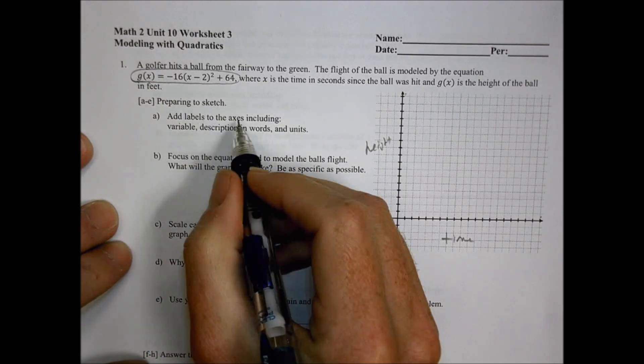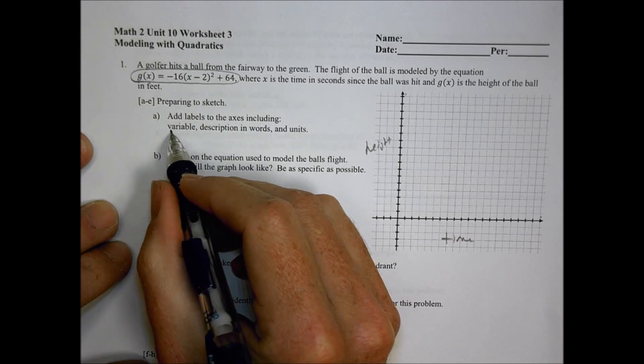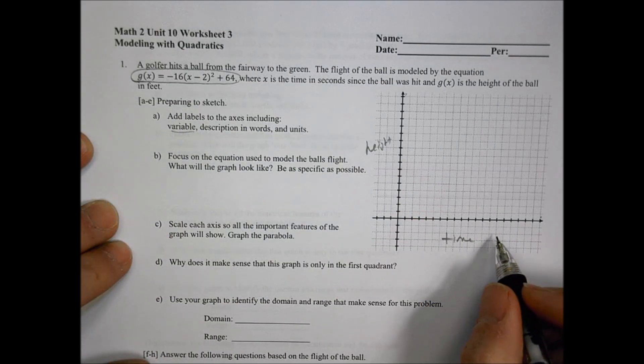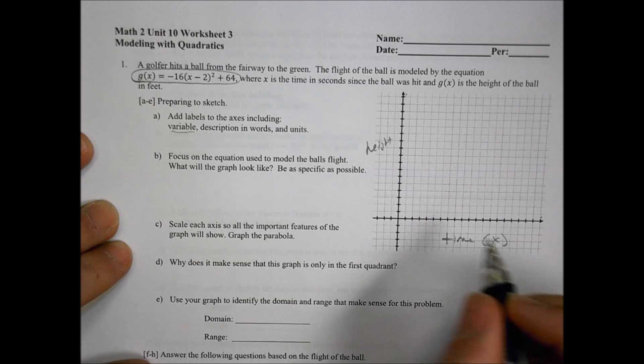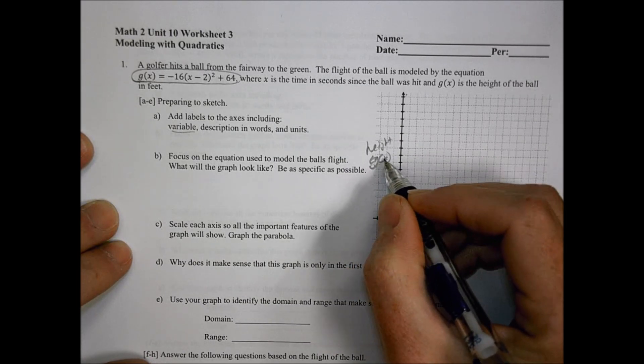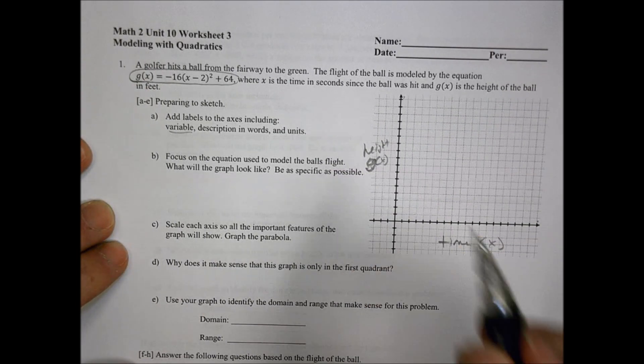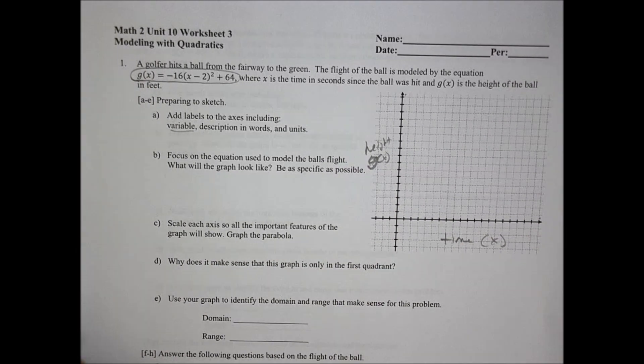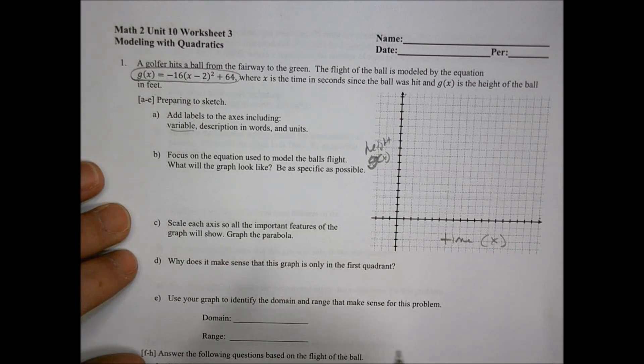So time is here in seconds on the x-axis and height is on the y side. Preparing to sketch, I'll add labels to the axis including the variable. This is going to be our x and height is our g(x). That's our variable there.